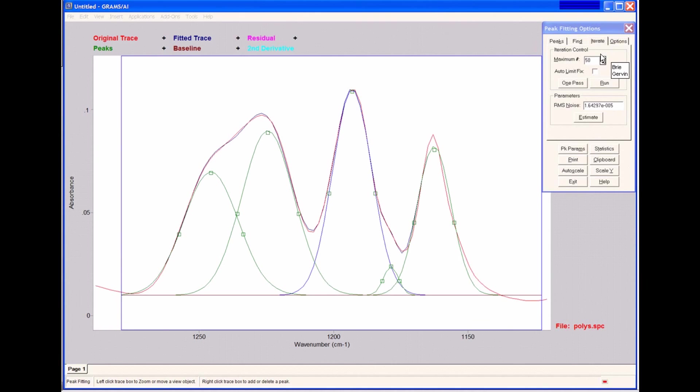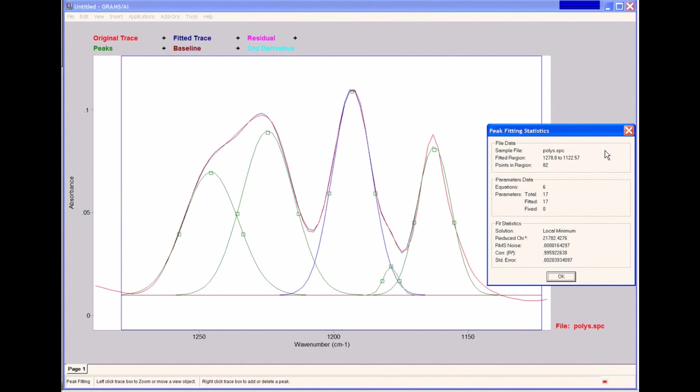To view our results once the iteration has been completed, we can click on statistics. This tells us some information about how the fit was performed. It shows us the region that we're fitting, the number of equations. The number of equations is always equal to the number of peaks plus one, because that extra one is the baseline. It gives us some statistics related to our fit. It did find a local minimum, so it found a solution mathematically to our fit. It gives us the R squared value for the fit, as well as some other parameters related to the goodness of the fit.